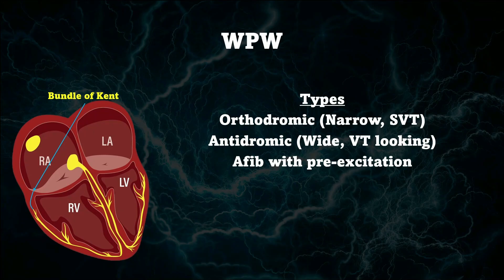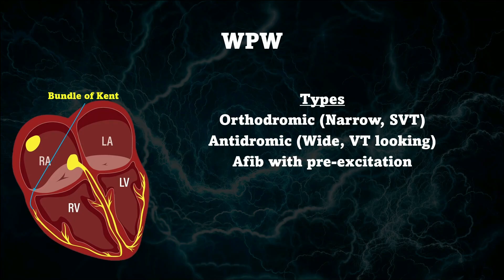Besides AFib with pre-excitation, you can have two other types. One is a wide complex tachycardia that looks like V-tach, or you can have a narrow complex tachycardia that looks like your typical SVT. The narrow one is going to be an atrioventricular reentry tachycardia — it's going to be orthodromic. We can get into more treatment options later, but just follow your own protocols. When in doubt, synchronized cardiovert them. It's really difficult to determine if a patient has antidromic AVRT versus ventricular tachycardia just from the EKG. The only way you can really tell is if the patient has been confirmed to have Wolf-Parkinson-White syndrome and then goes into a wide complex tachycardia — then you can assume it's antidromic AVRT.